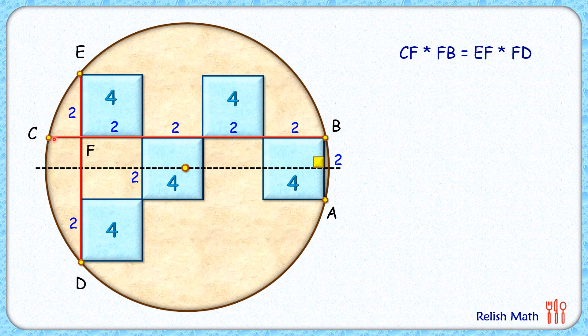CF, let's assume the length CF is X cm, FB length is 8 cm, EF is 2 cm, and here for FD this length is also 2 cm so FD is 4 cm. Putting these values and solving it we get X as 1 cm, so this CF length is 1 and CB length is 9 cm to find the radius.